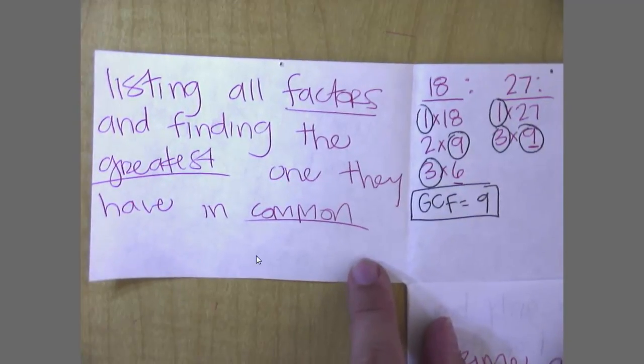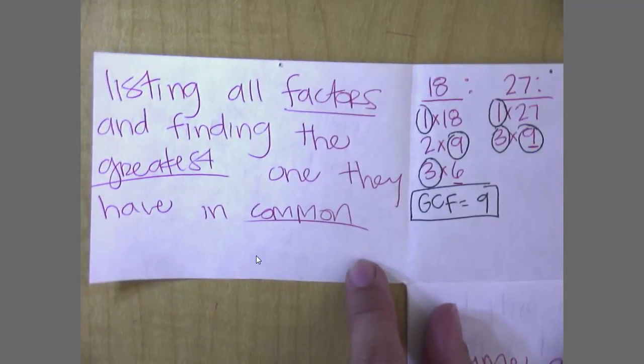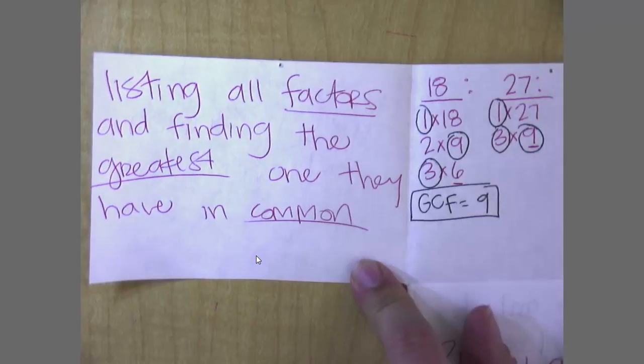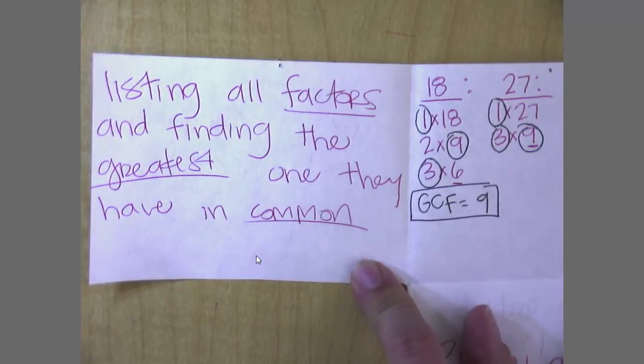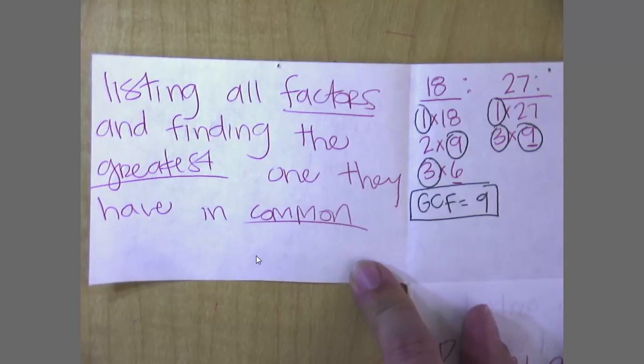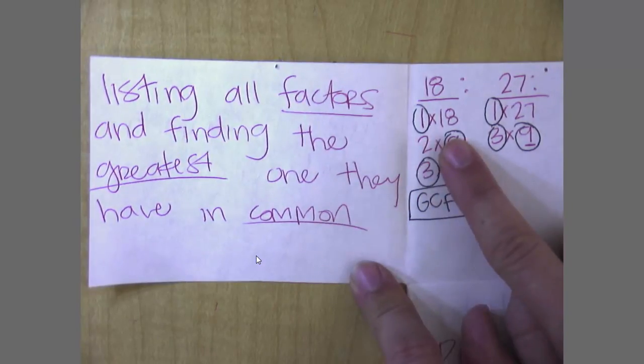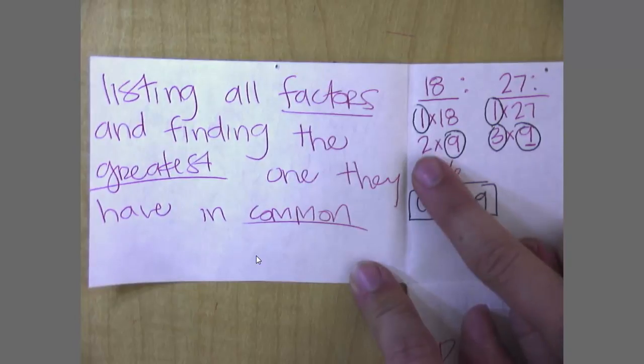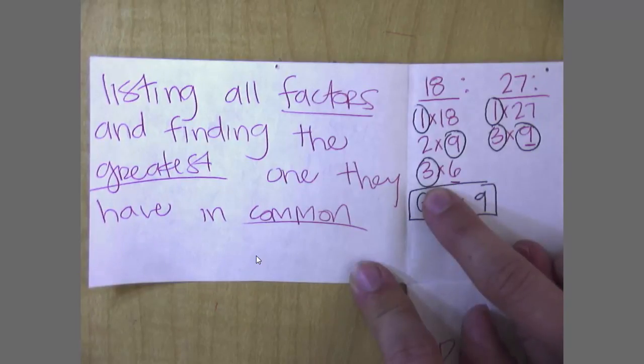The first one that we're going to look at is 18 and 27. I like to go in order, you know that I like everything nice and orderly. I like to start with 1's every time, and then I go to my 2's, 3's, 4's, and so on. So I wrote down, I've got 1 times 18. Then I go to 2's, 2 times 9. Then 3's, 3 times 6. I look at my 4's, and I don't have anything. 4 times nothing equals 18.